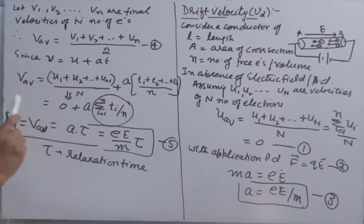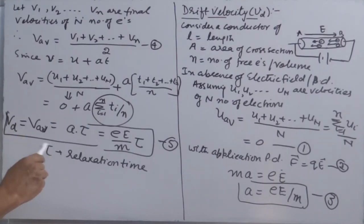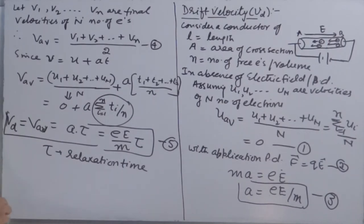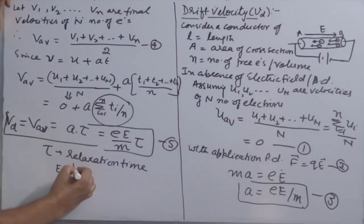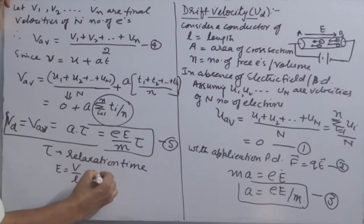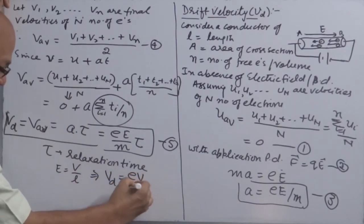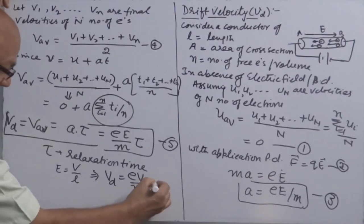Drift velocity is defined as the average velocity of free electrons with which they move inside the conductor under the influence of electric field. Since electric field E is also equal to V/L, drift velocity can also be written as V_D = eVτ/(mL).